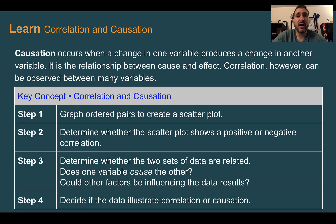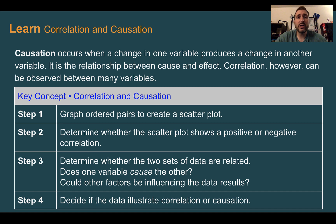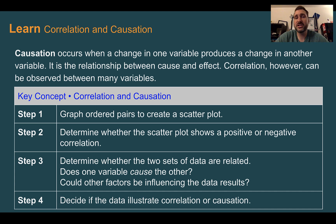Correlation and causation. Causation occurs when the change in one variable produces the change in another variable — it's the relationship between cause and effect. Correlation, however, unlike causation, can relate many different variables even if they're not really related. We're going to use this to determine: if we see a correlation, is it actually a causation? Is one of them actually causing the other, or are they just seemingly related?